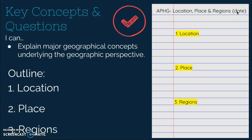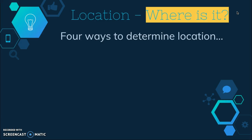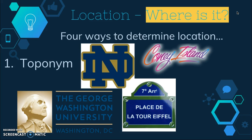Today we're talking about three of the five themes of geography: location, place, and regions. The first thing we're going to talk about is location. Location answers the question, where is it? Location is the position that something occupies on the earth. There are four ways to determine location.